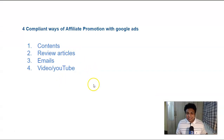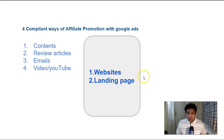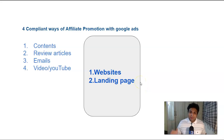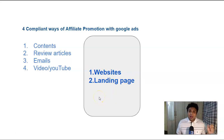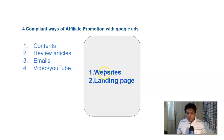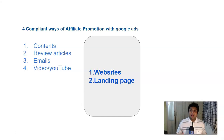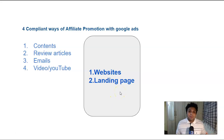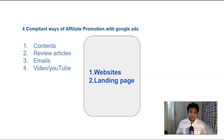While promoting with these four compliant ways of affiliate promotion with Google Ads, you need the right platform — a website and landing page. The question is: which is better when it comes to being compliant with Google Ads while promoting an affiliate offer? Is a website better than a landing page, or vice versa? What are the key ingredients to keep in mind while creating your website and landing page? Watching this video till the end, you will learn how to create a high-converting landing page compliant with Google Ads while promoting an affiliate offer, and it will also help you keep your account from getting suspended.